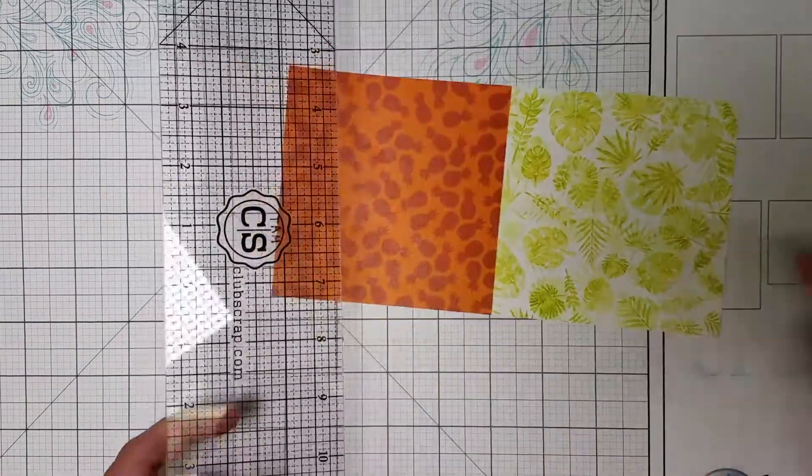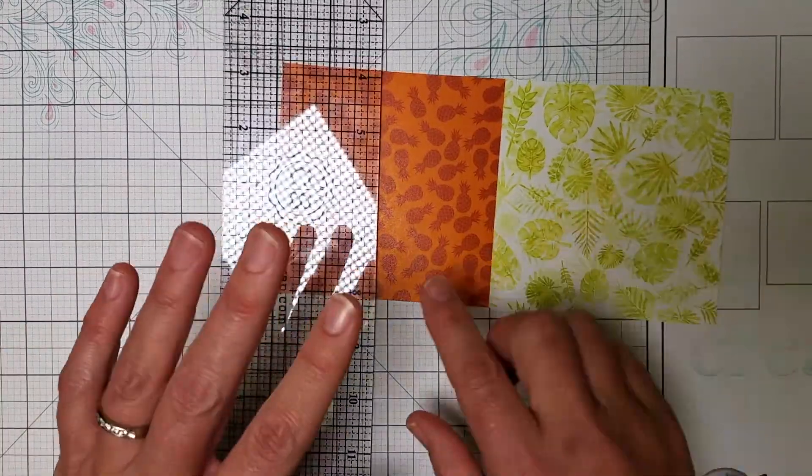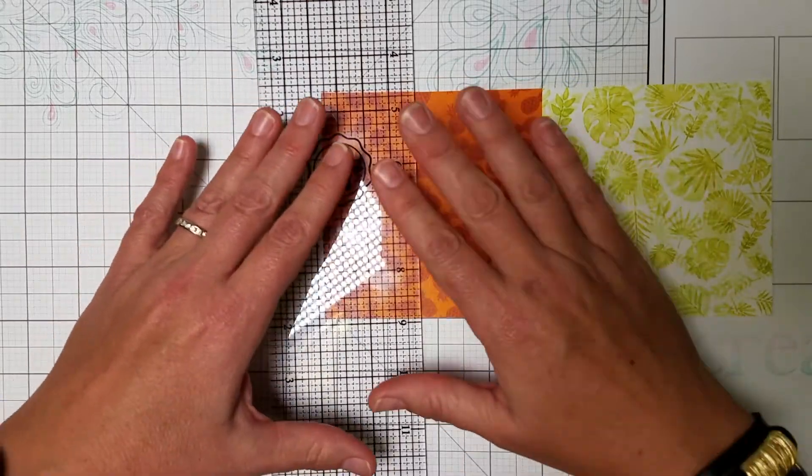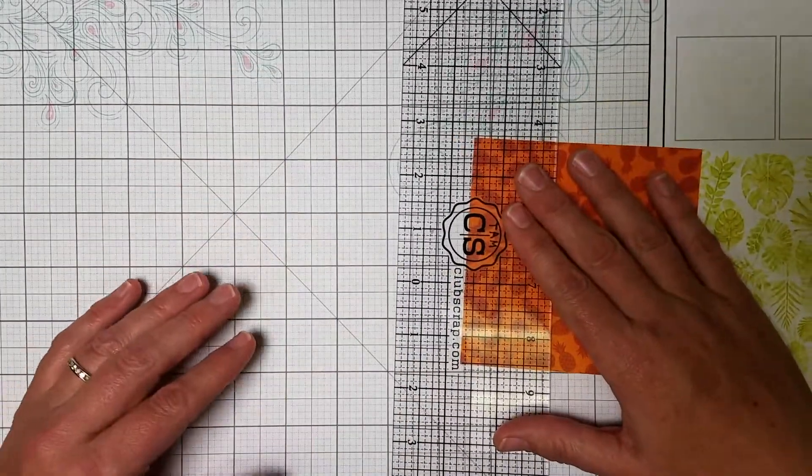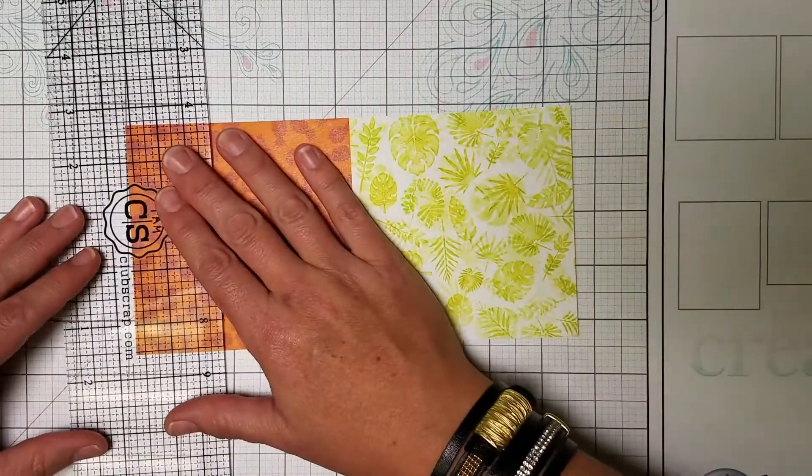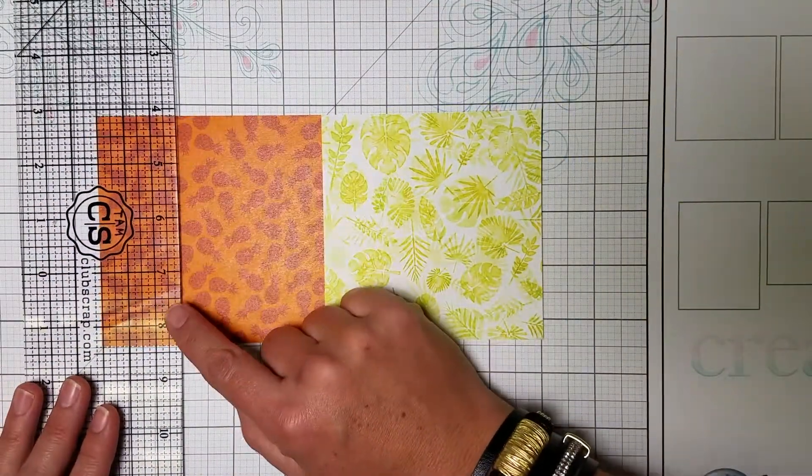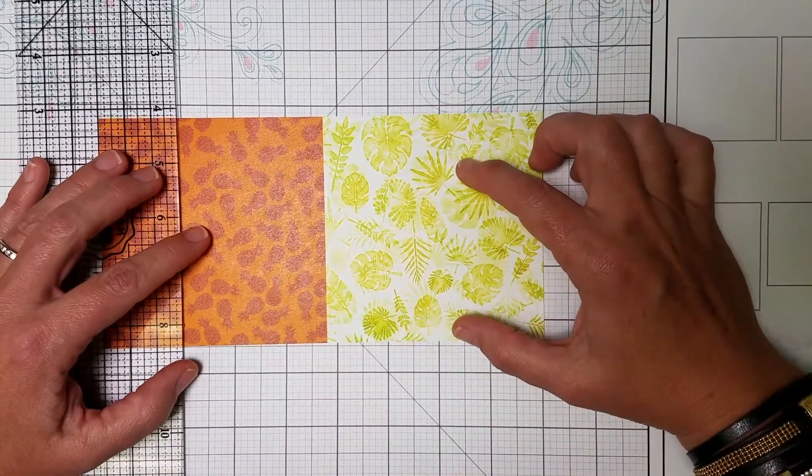You need to have a grid ruler, one of Club Scrap's awesome grid rulers. And I'm sorry for the glare we're getting here. I'll move it over a little bit so that you can see that. Okay, so we're going to place our paper horizontally. Now this is 4.25 by 8.5. Then we're going to take the ruler and position that vertically, so this is horizontal, this is vertical.